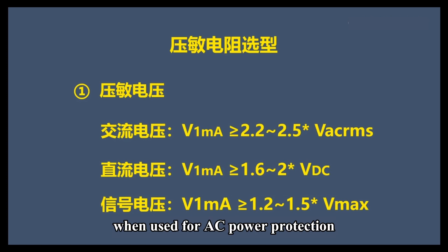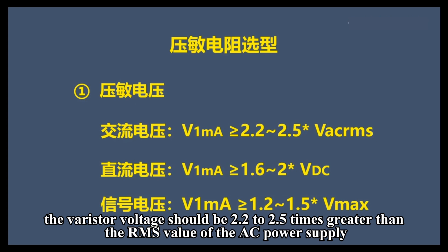When used for AC power protection, the varistor voltage should be 2.2 to 2.5 times greater than the RMS value of the AC power supply.